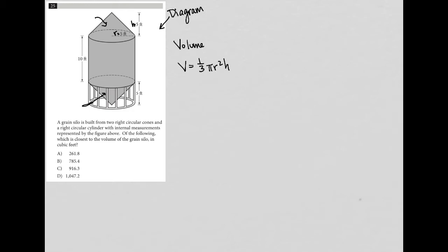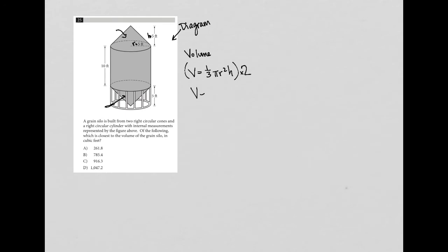The volume for a cone is v equals one third pi r squared h. We have two of those, so cone one and cone two are the exact same measurements. We're going to eventually multiply this entire volume by two. The volume for a cylinder is v equals pi r squared h. We only have one cylinder, so we're going to add these two volumes together in order to solve this question.